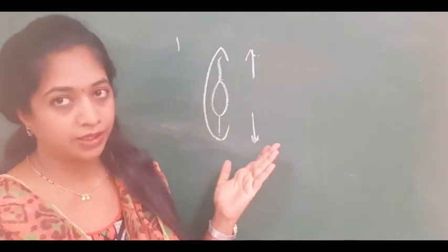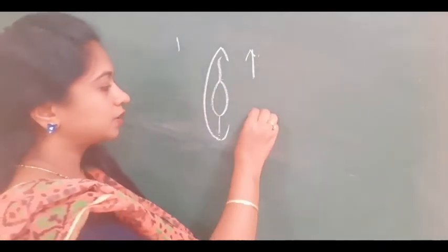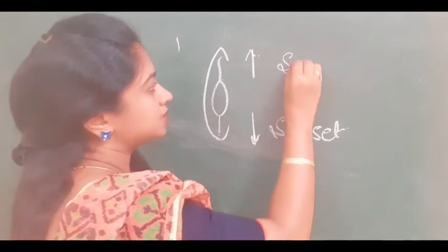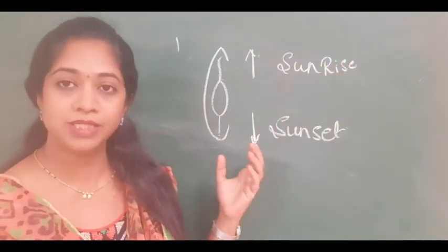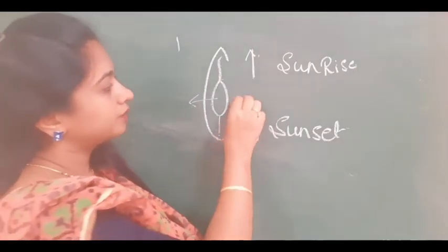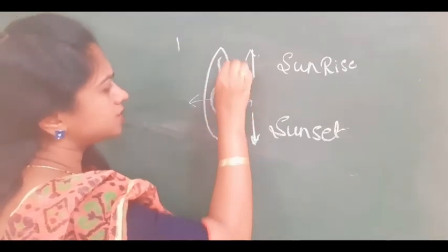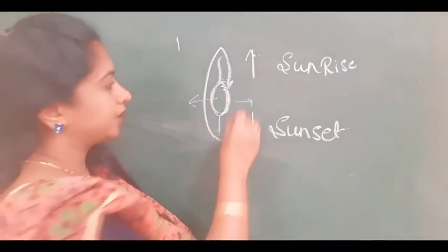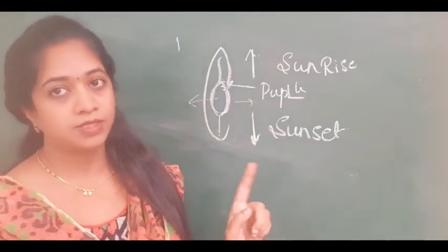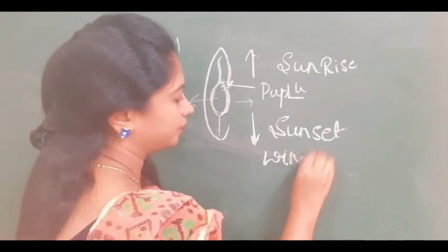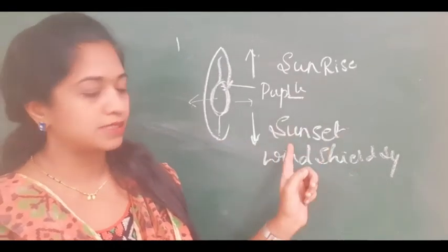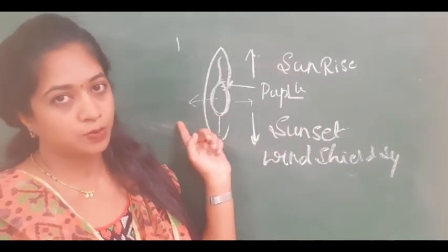The posterior chamber IOL should ideally be sitting in the capsular bag. Sometimes there can be subluxation of the lens — downwards or upwards — due to causes like zonular weakness or vitreous loss with incomplete vitrectomy. Downward subluxation of the IOL is called sunset syndrome, and if the IOL has moved up it is called sunrise syndrome. There can also be complete dislocation of the IOL into the posterior chamber or anterior chamber. The optics of the IOL can come over the iris leading to pupillary capture, and the haptic can rub the cornea causing windshield wiper syndrome.